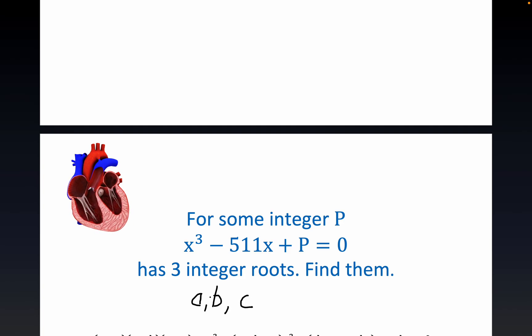Okay, so in other words we have the roots a, b, and c let's call them. That would mean that a cubed minus 511a plus P is equal to zero. Same for b and same for c. We're supposed to find these even though we don't know what P is.